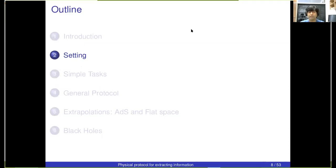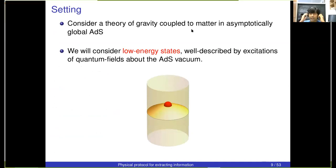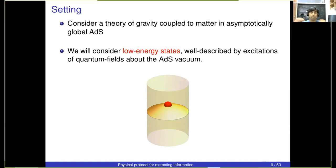Let me describe the setting. We'll consider a theory of gravity coupled to matter living in a spacetime that's asymptotically global AdS. I'll consider a set of low-energy states that are very well described by excitations of quantum fields about the AdS vacuum. The idea is that you have gravity, you have matter, you do effective field theory, you quantize the graviton and matter fields, and you get excitations about the global AdS vacuum — these are the states we consider in the first part of the talk.